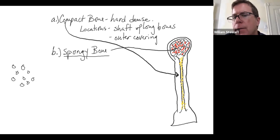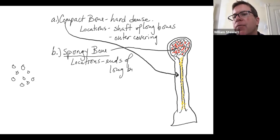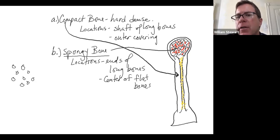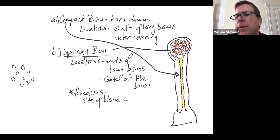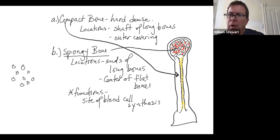Spongy bone is found at the ends of long bones and in the center of most flat bones. Its main function is that it's the site of blood cell synthesis — where red blood cells, white blood cells, and platelets are manufactured. We'll go into greater detail about bone when we study the skeletal system.